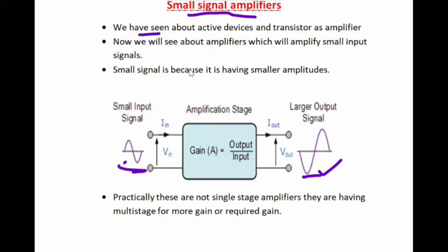In small signal amplifiers at the practical stage, we will not get enough amplified output to drive a load requiring heavy voltage or currents. We can drive small buzzers or small LEDs rated at two or five volts, but not more than that. So to gain more amplification practically, multi-stage amplifiers are used.